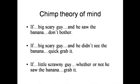Or suppose the high-ranking scary guy has seen the banana placed there, but then he's taken out and a different high-ranking scary guy is put in. The low-ranking guy goes for the banana — he understands that this guy doesn't know it's there. He understands that another chimp can have different thoughts, and acts strategically to take advantage of that. That's totally wild — this completely blows developmental theory-of-mind human research out of the water. So we're not so unique with that. Where are we unique, though?